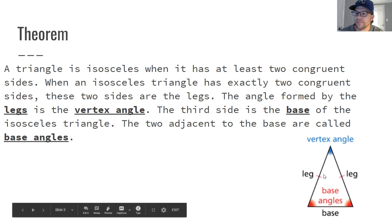Notice this triangle down here in the bottom right. The two markings that indicate that the sides are congruent, those are called the legs. It could be tilted off to the side, but anywhere where you see the two markings are the legs.